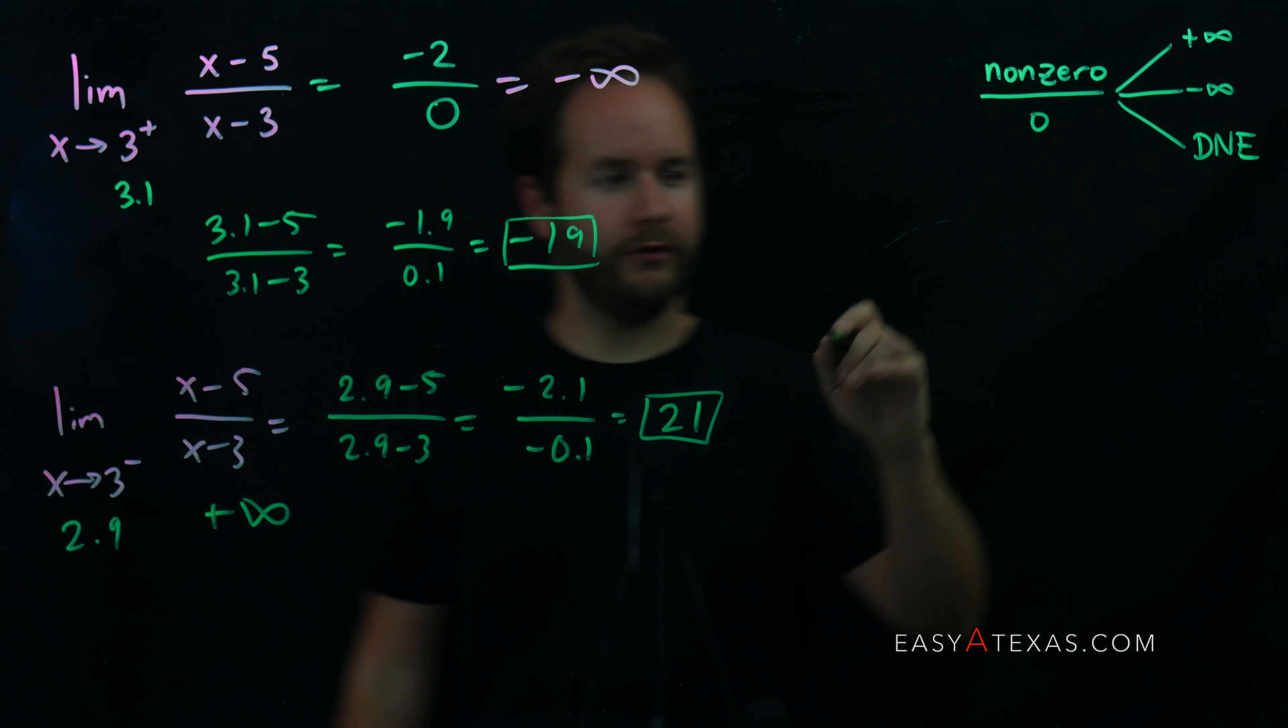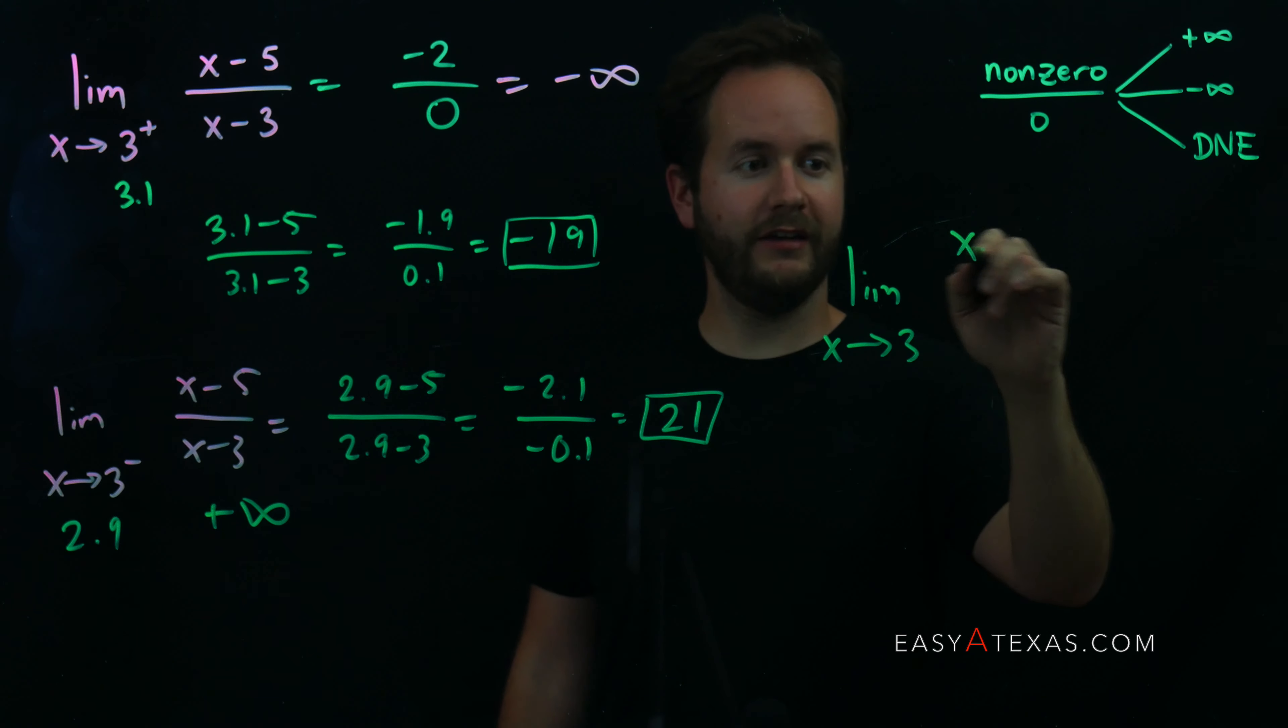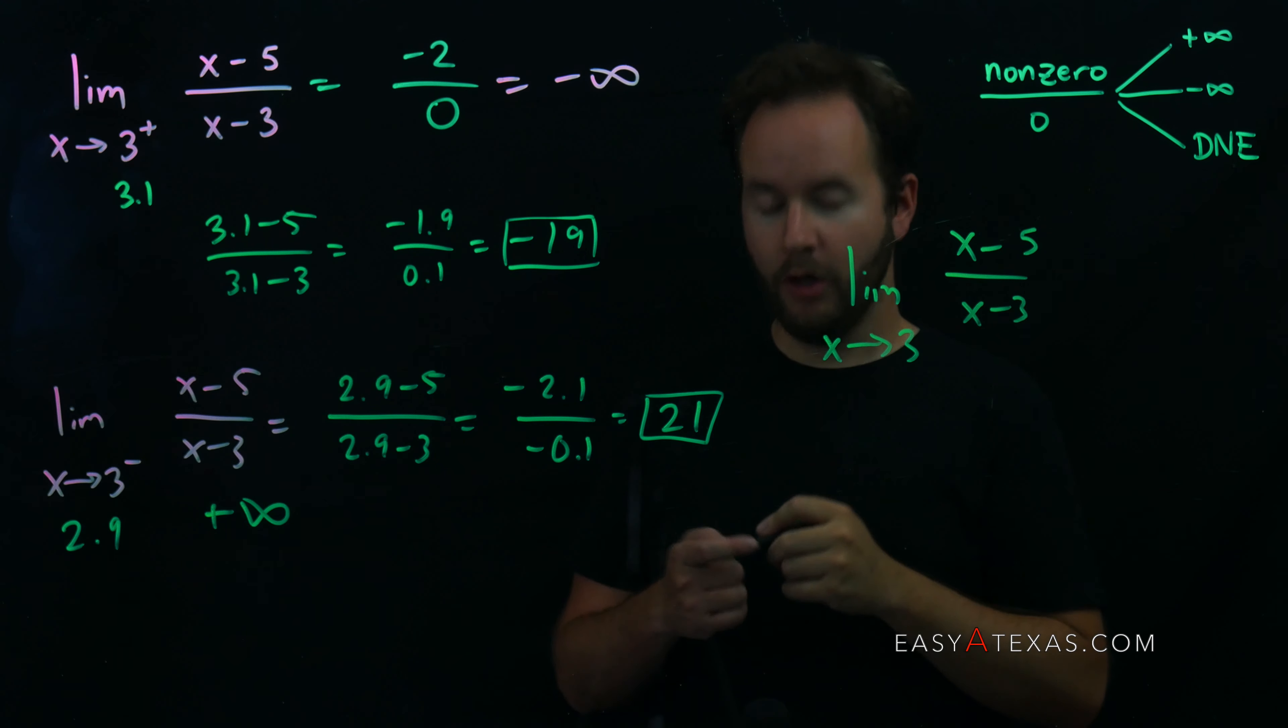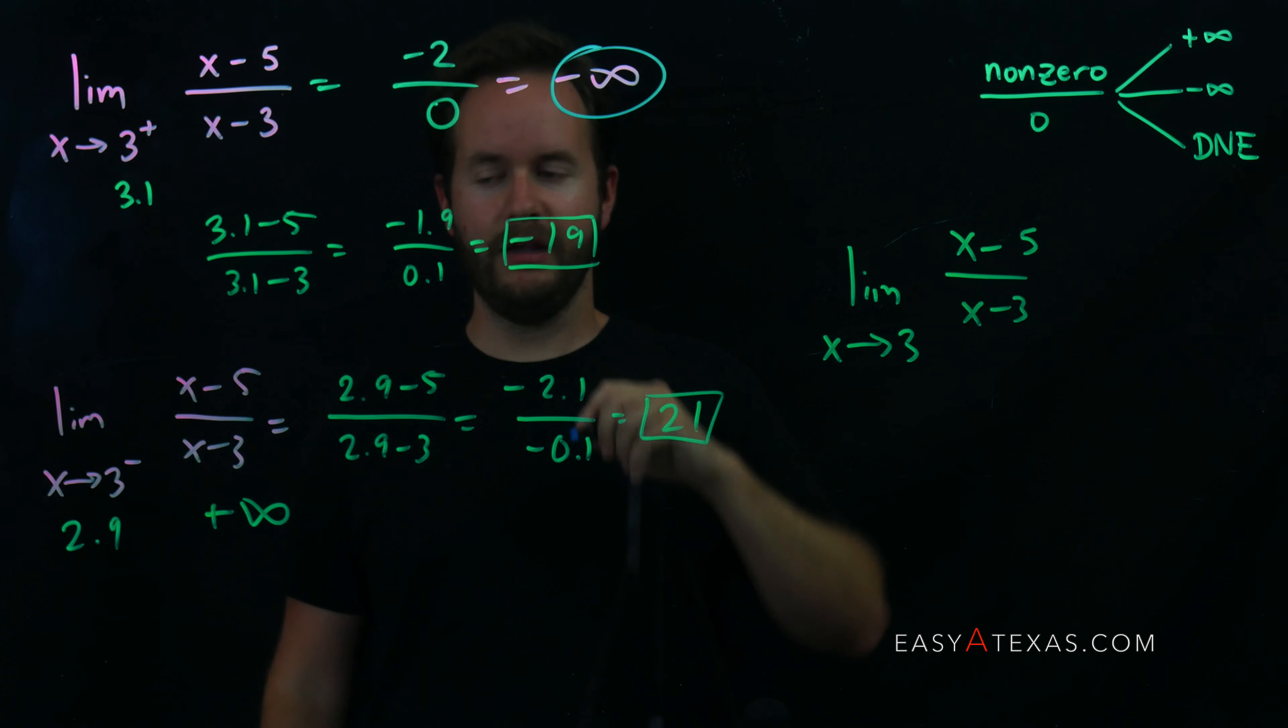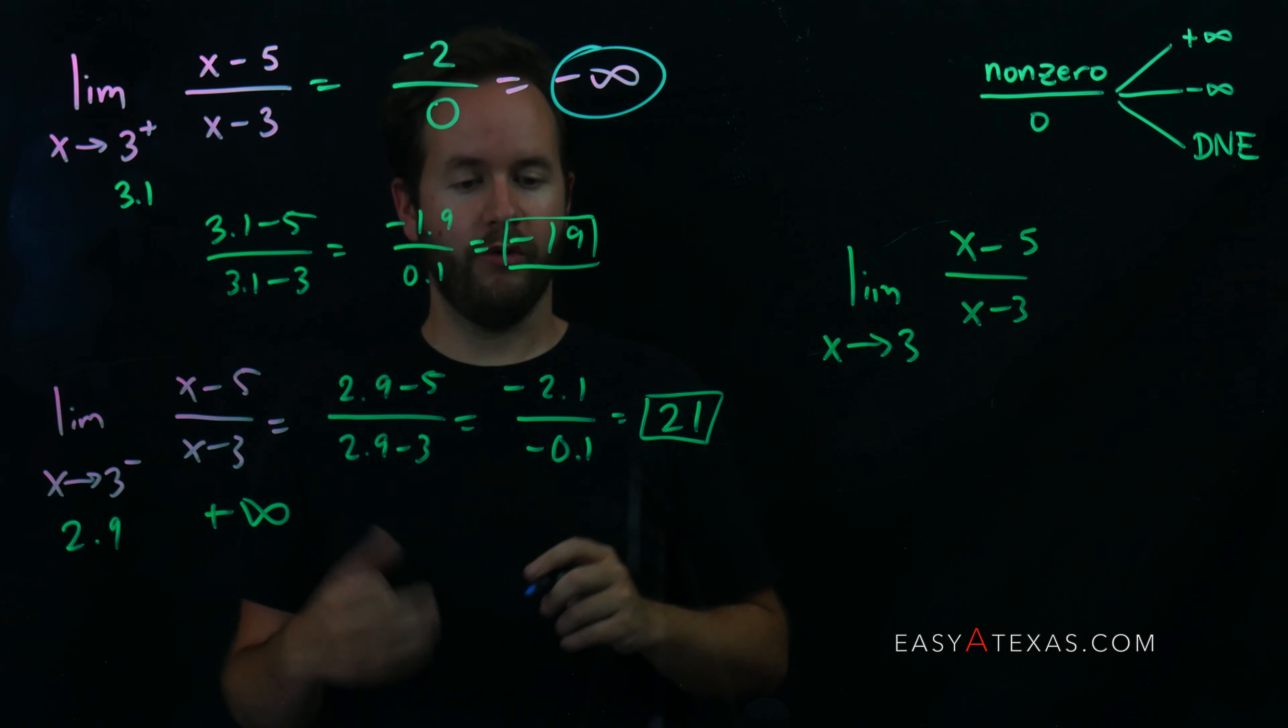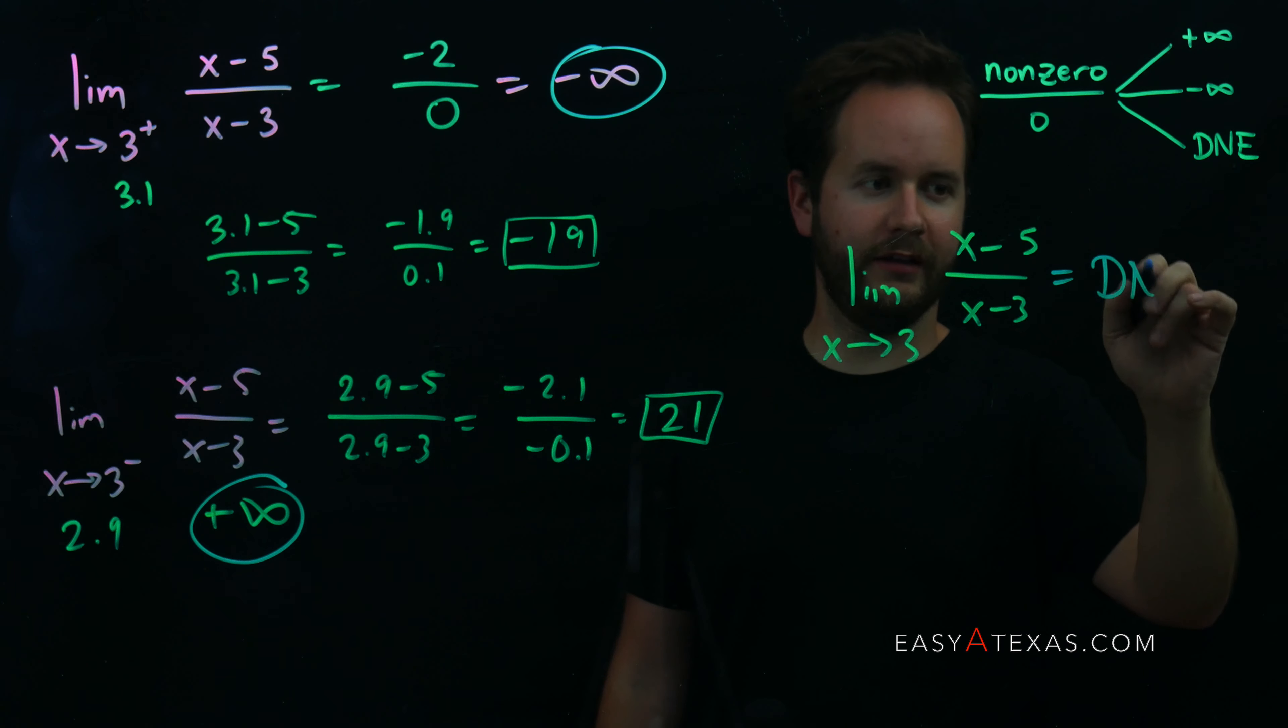Let's wrap it all together now and do the two-sided limit. So limit as x approaches 3, without putting a superscript of plus or minus here, means I need to figure out both the left-hand limit and the right-hand limit when x approaches 3. We already found those values. We found the right-hand limit when we approach 3 was negative infinity. We found the left-hand limit when x approaches 3 from the left was positive infinity. So because these two infinities are not the same, the overall two-sided limit would be does not exist.